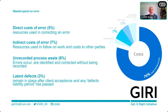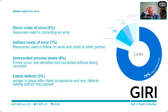7% are indirect costs — the impact on others, particularly delay and disruption and loss and expense claims. 6% is unrecorded process waste where errors are made and hidden or corrected but not recorded, yet they still have an impact. Then 3% are latent defects which manifest sometimes well after handover. Profitability in construction generally hovers around 2–3% of turnover, so the spend on putting things right is an order of magnitude higher.